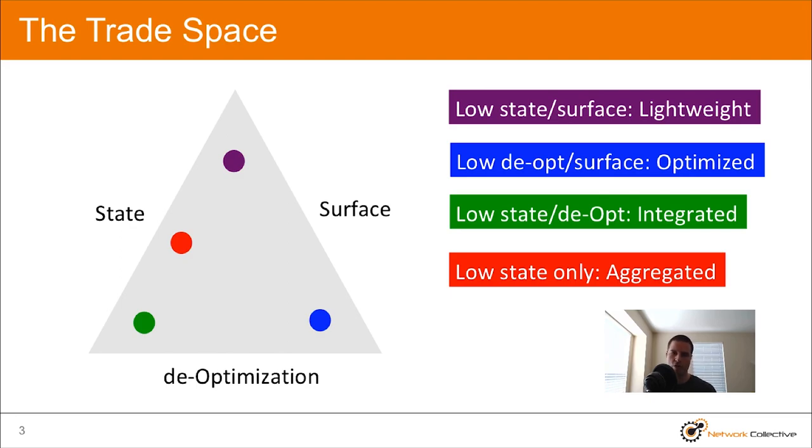So when I say low state only, I'm saying that the target here of this design was to really just reduce state. So I might end up with an aggregated design. So as this part of the trade-off, I achieve really low state and the other two are kind of midway between. So I kind of get one plus two halves, if you want to think of it that way.